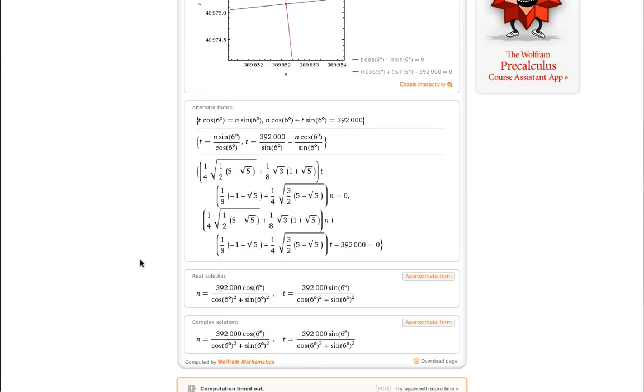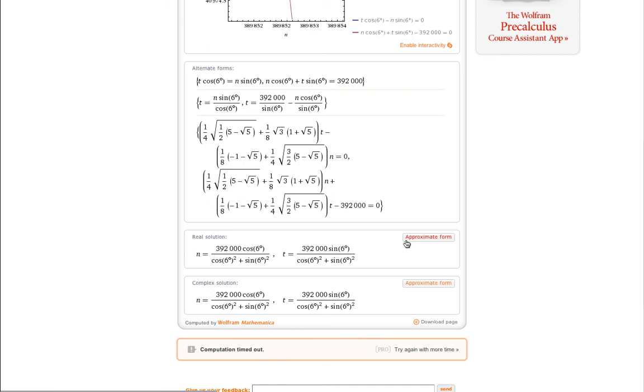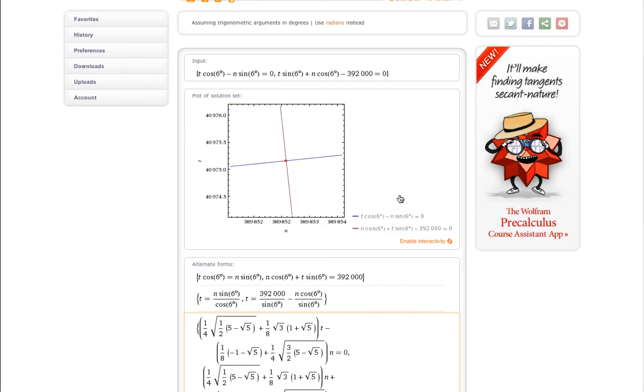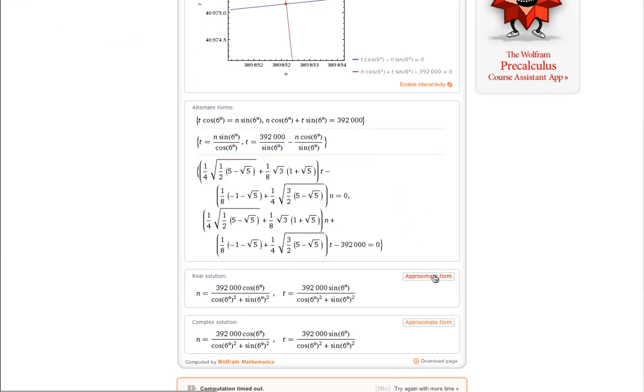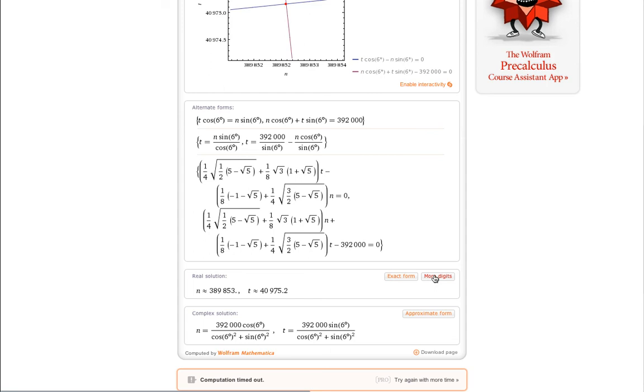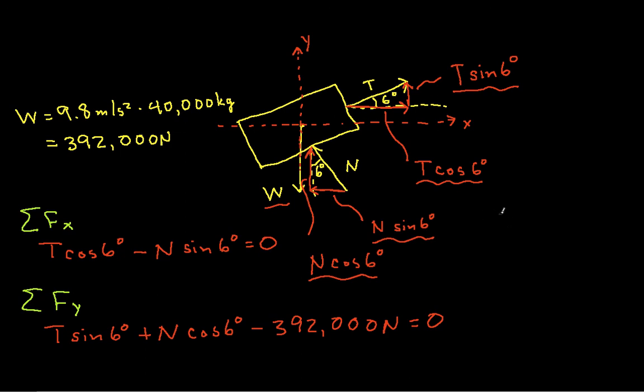And it comes up with all sorts of messy stuff that I really don't want to see. And basically, we get then that N is to three significant digits, 390,000. And T to three significant digits is about 41,000. So we have our solution then. We have that T is 41,000 newtons. And our normal force is 390,000 newtons.